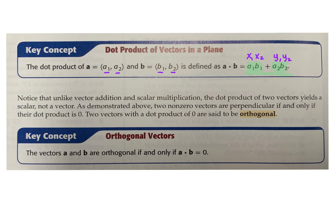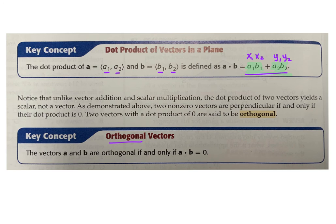For any angle except a right angle, you're going to get some numeric value other than zero. If the vectors have a zero dot product, they are perpendicular. The term 'orthogonal vectors' just means perpendicular. If they are perpendicular, the dot product will be zero. Orthogonal is a new term meaning your dot product is zero, which indicates you have perpendicular lines. Perpendicular lines form right angles, so if your dot product is zero, it tells you there's a right angle between those two vectors.